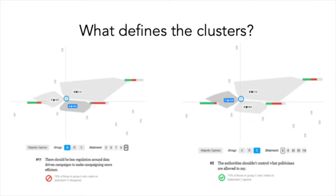It also allows you to see what defines the clusters — useful as a researcher, but also quite interesting as a participant. This is probably more interesting when you're making it a more open consultation where people are more interested in seeing how they fit. So you can see, for example, that if you click on Group A, it tells you the most defining thing about them — very few of them think there should be less regulation around data-driven campaigns. On the other hand, Group C are much more anti-regulation — 74% of them think authorities shouldn't control what politicians are allowed to say.